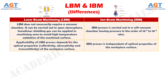Number 7. Applicability of laser beam machining process depends on the optical properties — reflectivity, absorptivity, and transmittivity — of the workpiece surface, whereas ion beam machining process is independent of optical properties of the workpiece surface.